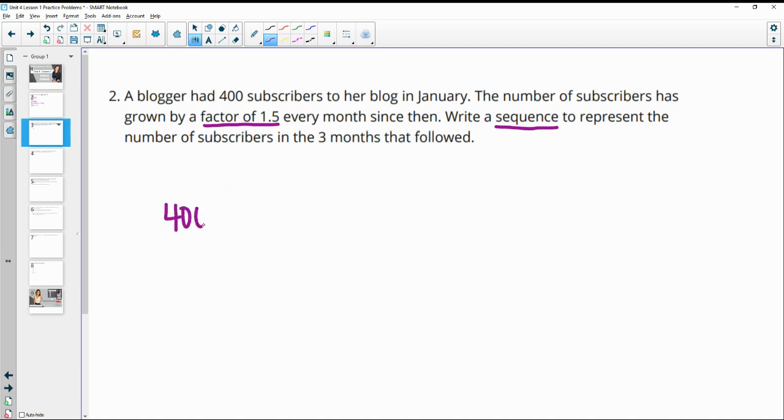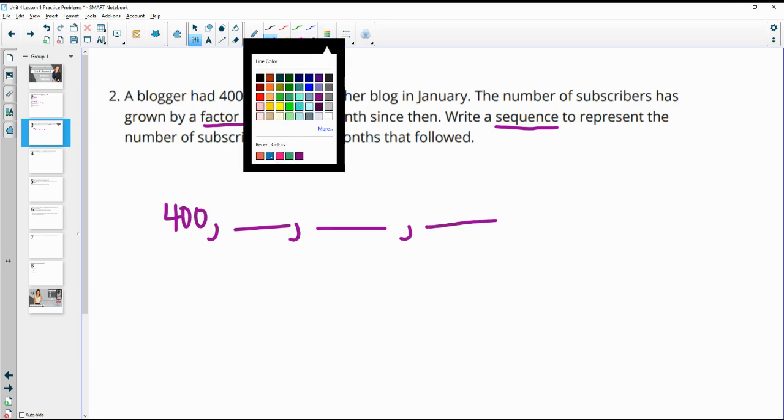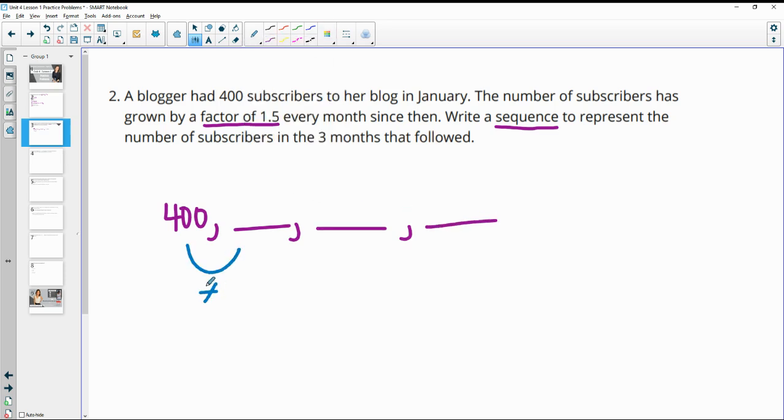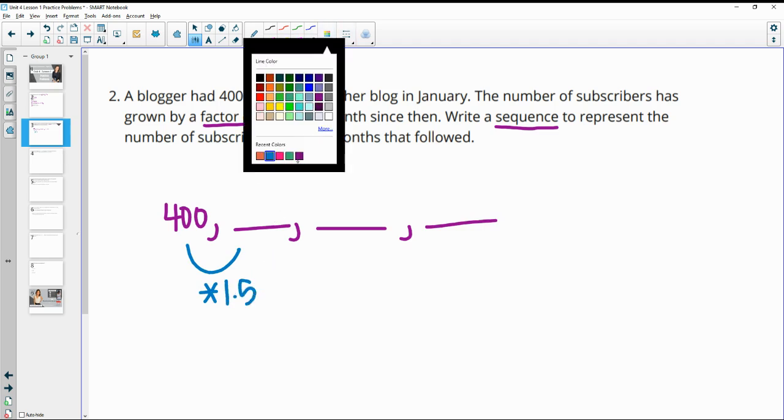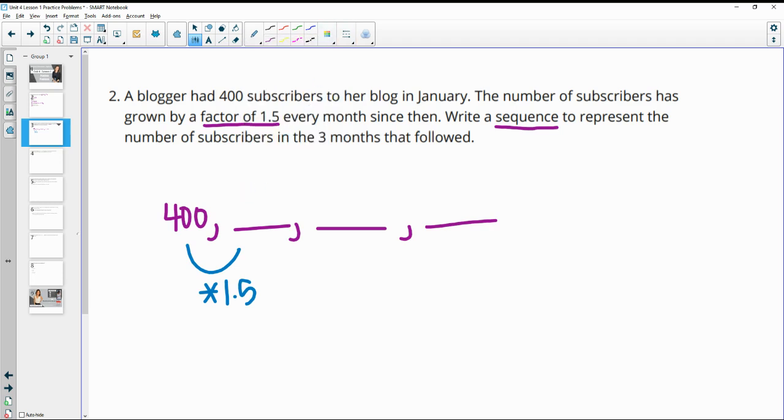So she started with 400 and then we want the three months that follow that. Remembering that each month she multiplies by 1.5 times the number of subscribers. So 400 times 1.5 is going to be 600.